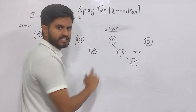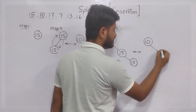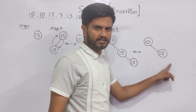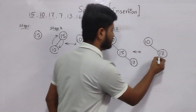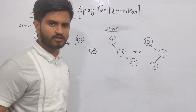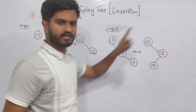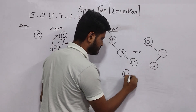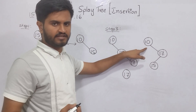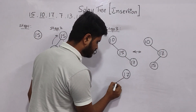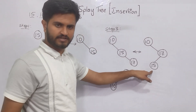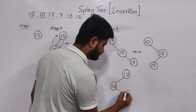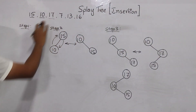10 stays the same. I exchange 17 and 15. After exchanging, only one element is left — 15. I check: 15 is less than 17, so I write it to the left. But 17 is still not the root. So I exchange 17 and 10 — 17 goes to root. I check: 10 is less than 17, so it goes left. 15 is less than 17 but greater than 10, so it goes to the right of 10. Step 3 is done — three elements inserted.